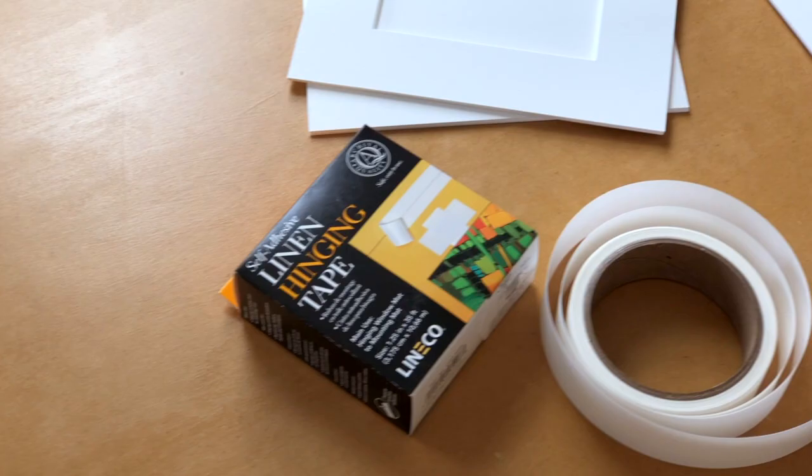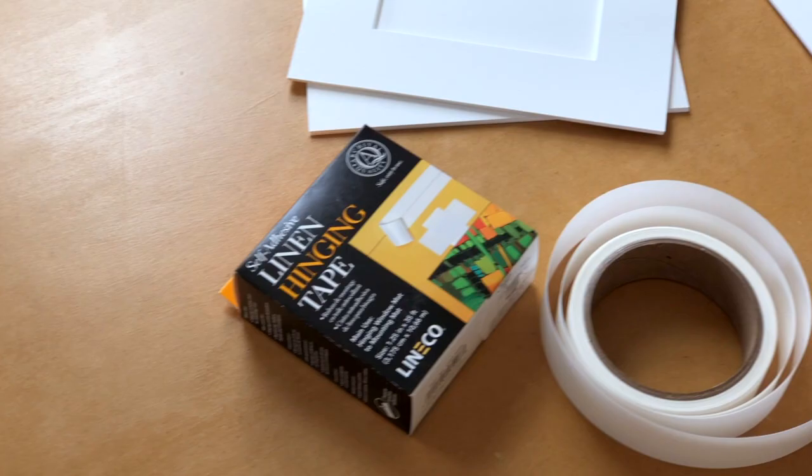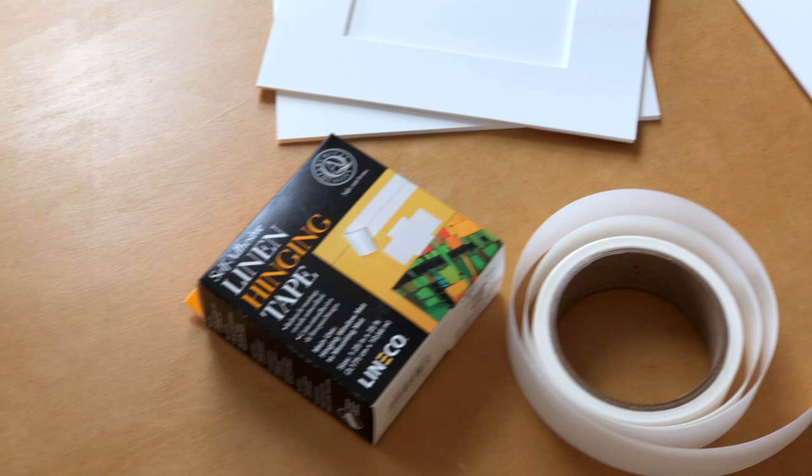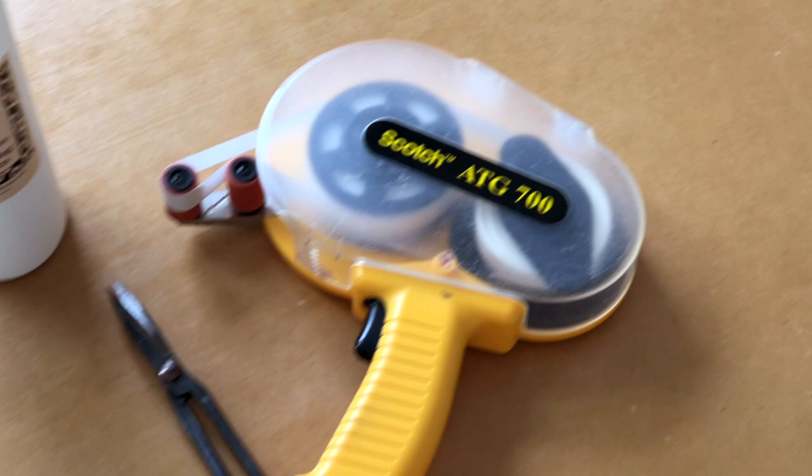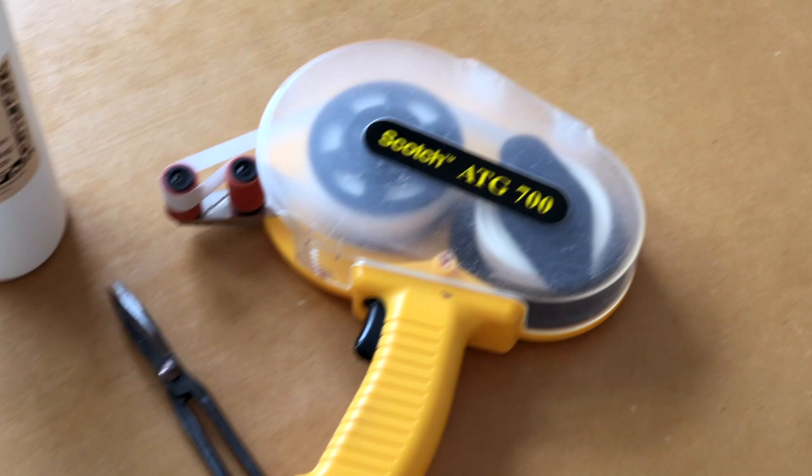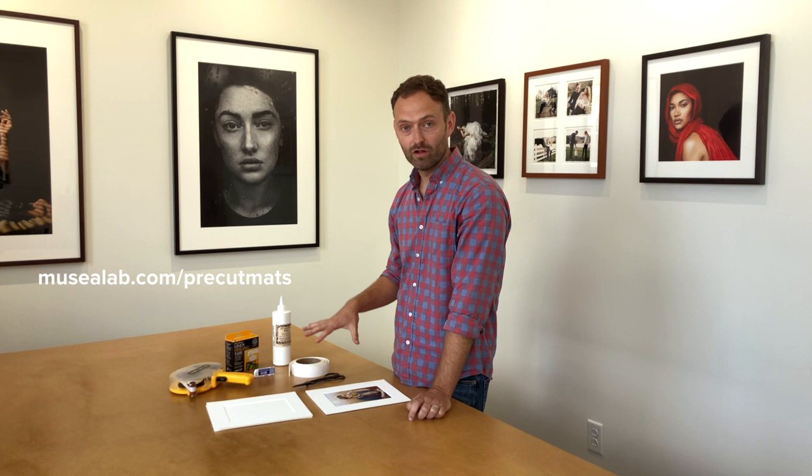All right, everyone, hopefully that was helpful and gets you started on your journey for matting. Just a reminder, on our website we do have available pre-cut front and back mats in various widths. We have four-ply, eight-ply, we even have two-ply backs on there if you want a thinner back. We also have all of the supplies on the exact same webpage. And also make sure to like and subscribe to our YouTube channel. We're going to have a lot of content moving forward. So thanks again for watching. See you soon.